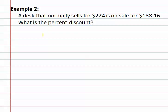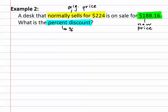We once again, have to find all of the pieces. We see that it normally sells for 224 dollars. This means this is our original price. Next, we see that it is on sale, and its sale price is 188 dollars. This is its new price. Finally, it asks, what is the percent discount? This is the percent portion.